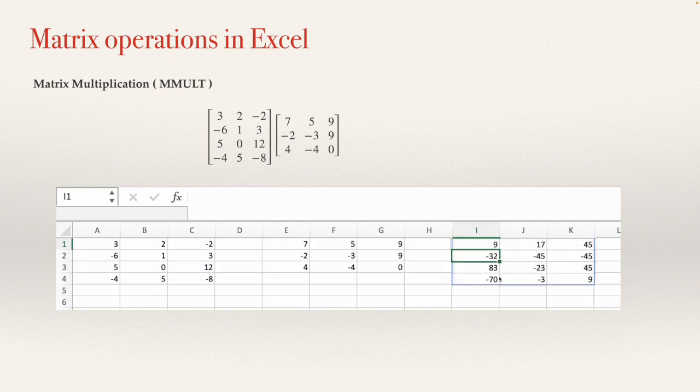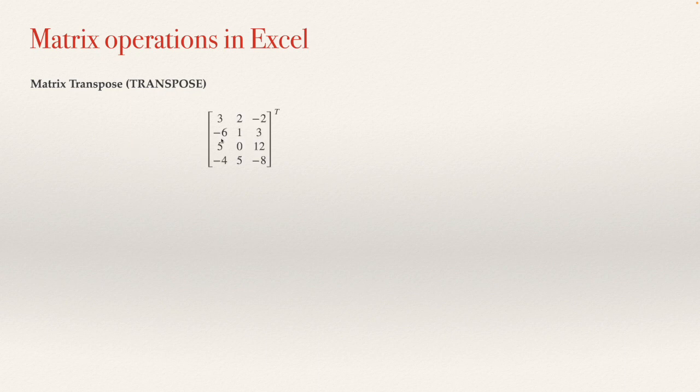This is the matrix multiplication. There is another operation, which is the transpose. The transpose will again be a function in Excel, so you will need to put a function in brackets. If you have a matrix, it will be very easy to make a transpose with your computer. This will be very useful when you need to make several operations, and I will give you an example soon.